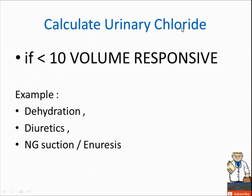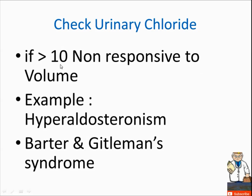To repeat: calculate urinary chloride. If less than 10, it is volume responsive — causes include dehydration, diuretic use, NG suction, and emesis. If urinary chloride is greater than 10, the conditions are non-responsive to volume.